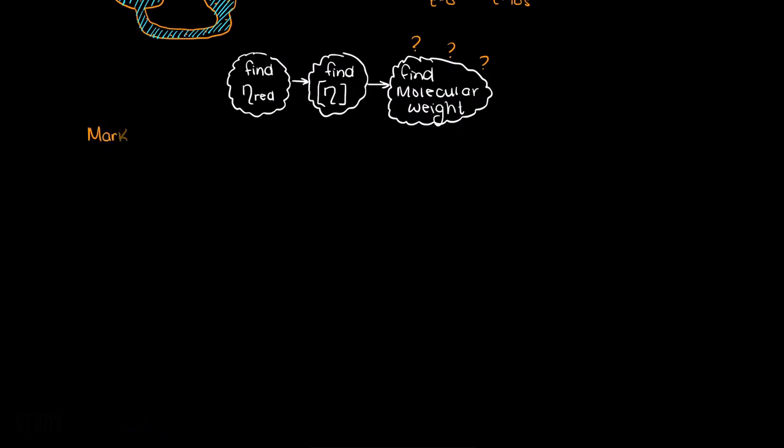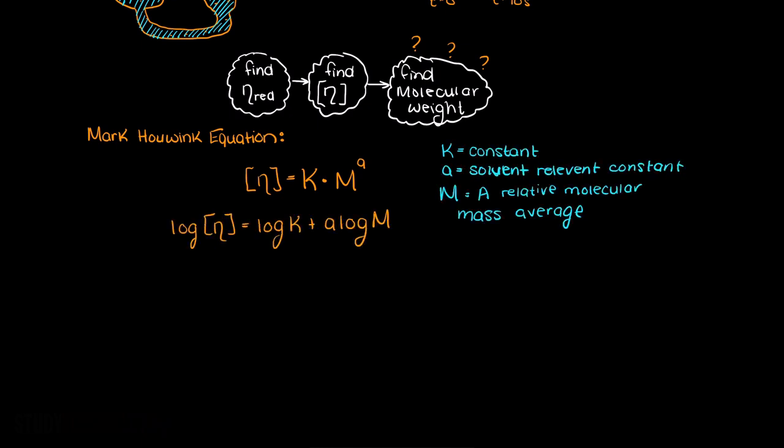Well, we need to use an empirical, meaning from experiments, relationship. Through taking the logarithms of the intrinsic viscosities at the various concentrations and the logarithms of the molecular weights of each test makeup plus our two constants, we can find our molecular weight.